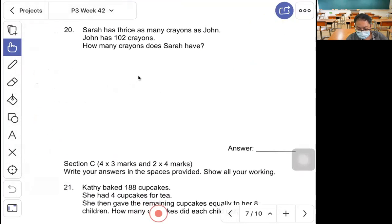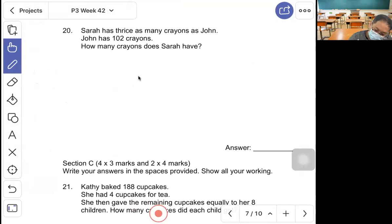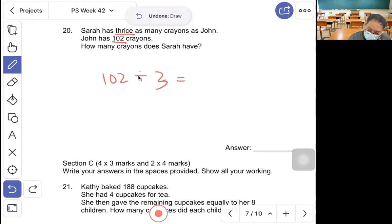Question 20, Sarah has twice as many crayons as John. So John is one unit and Sarah is two units. How many crayons does Sarah have? Take 102 divided by 3. No, sorry, we want to find Sarah, so Sarah has three times. Answer: 306.